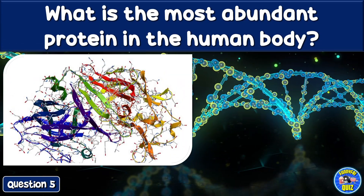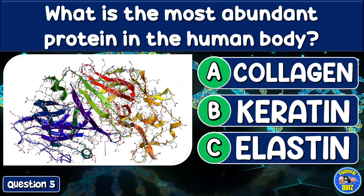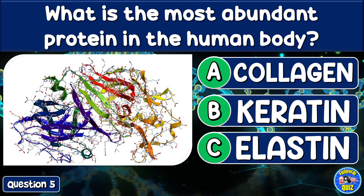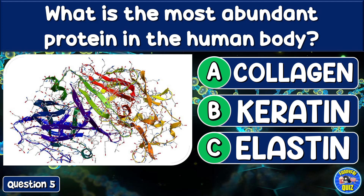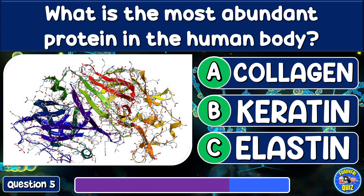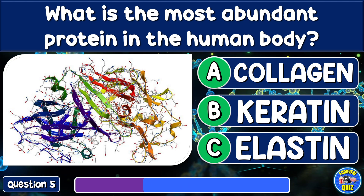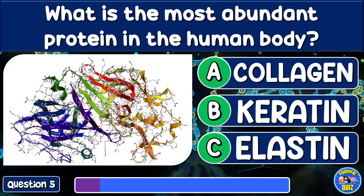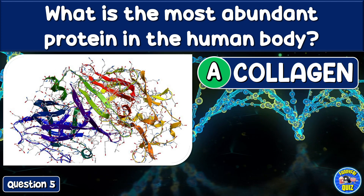What is the most abundant protein in the human body? Collagen, keratin, or elastin? Collagen.